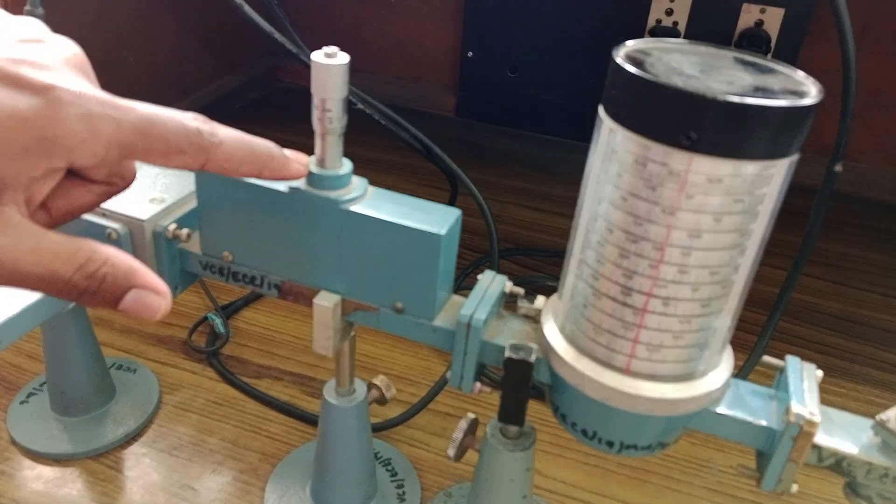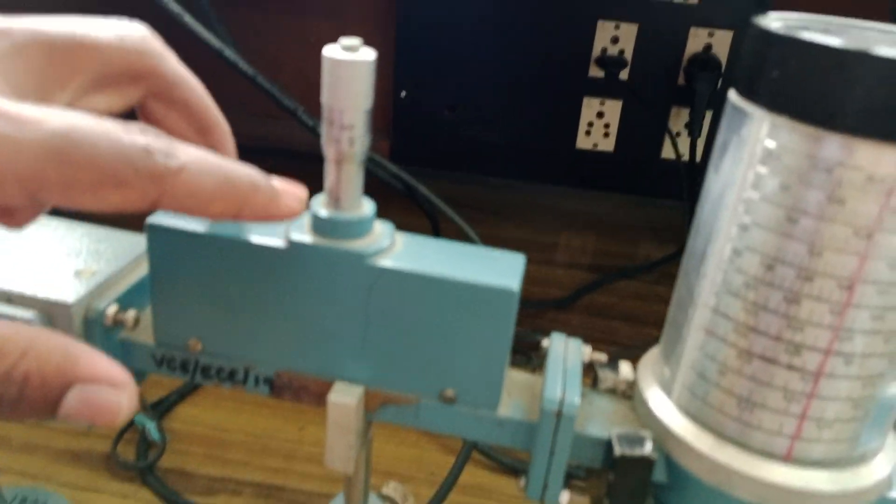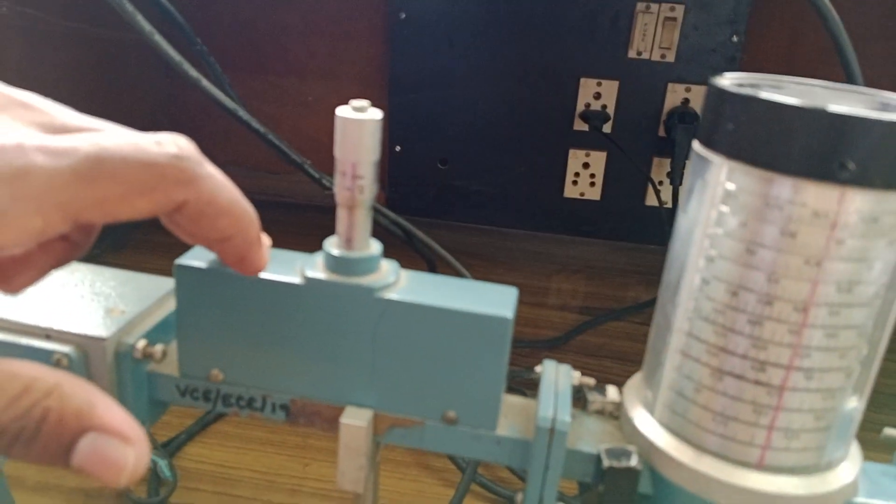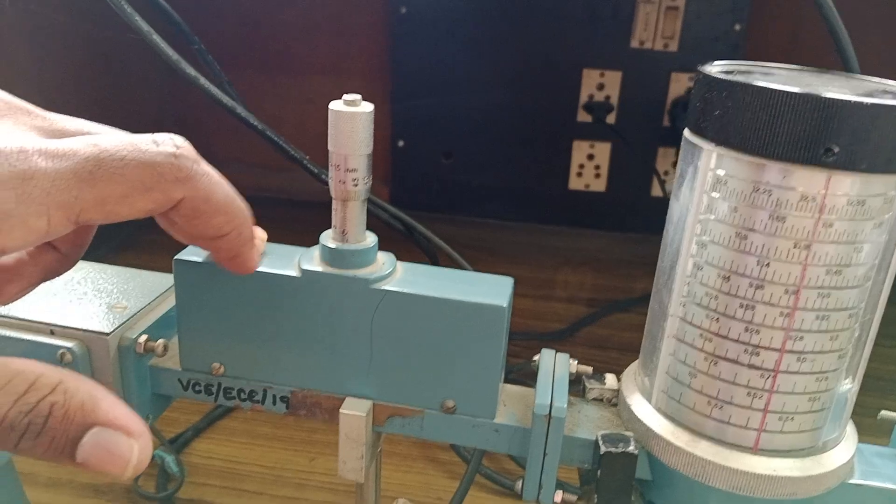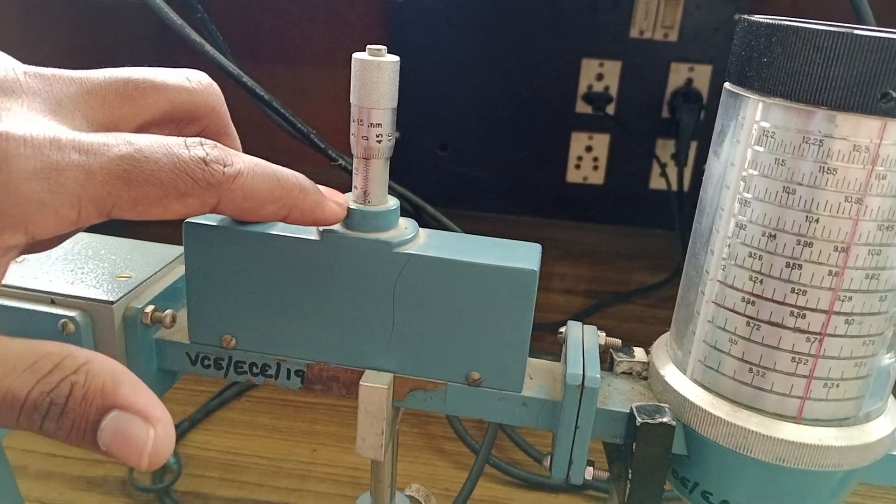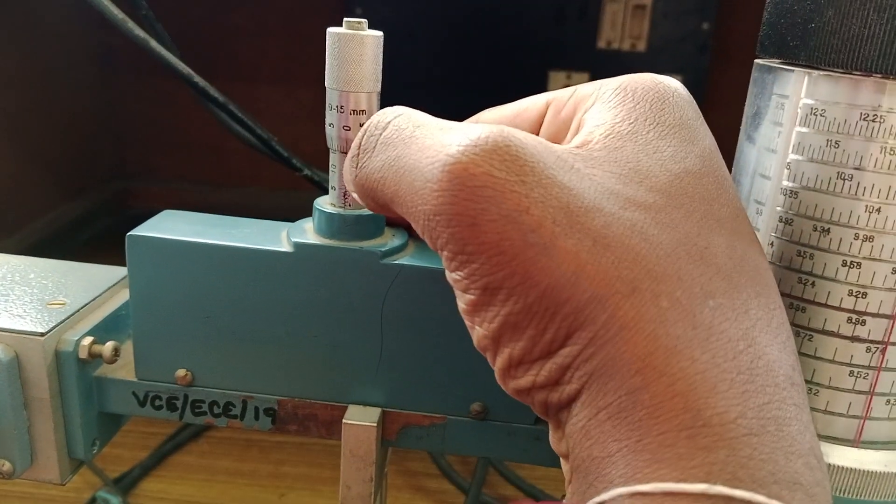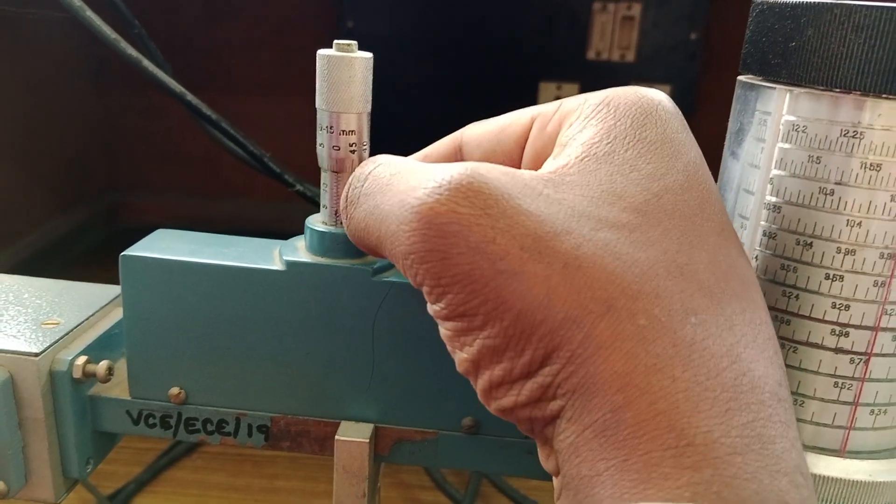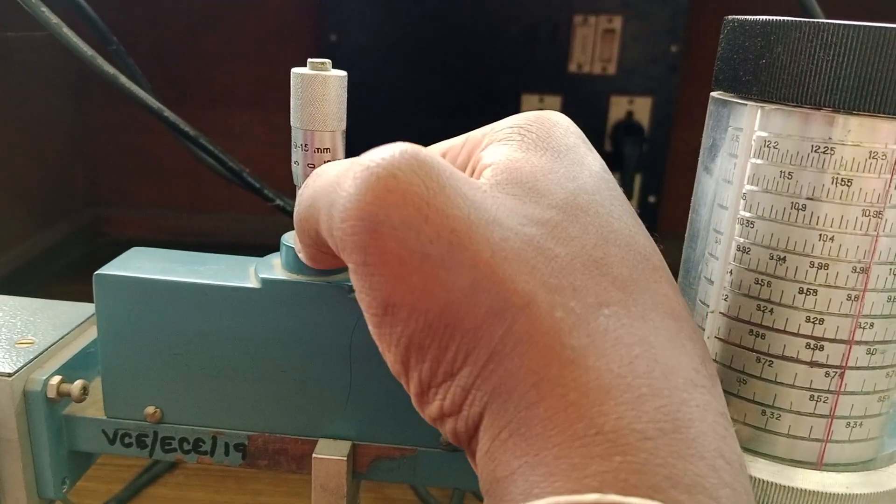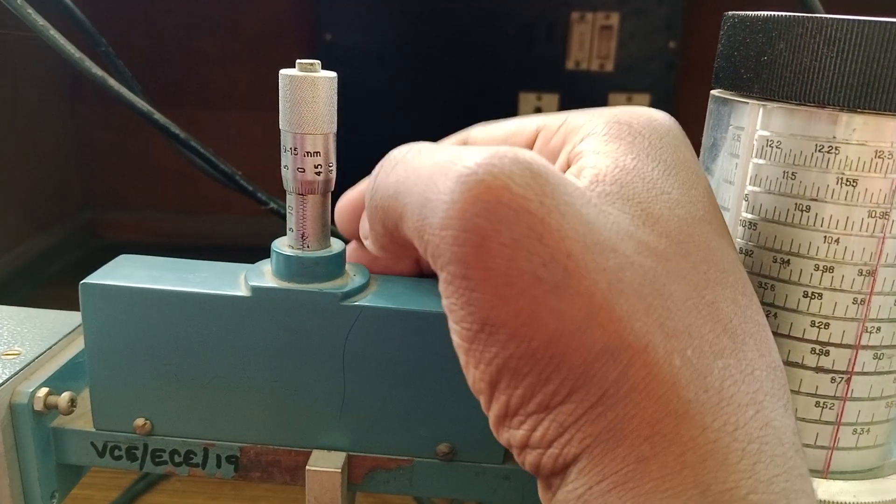Once you are done with that, here you can see the variable attenuator has a scale. Here you have readings from 0. You have to see where the 0 of the rotatable norm and the fixed scale are coinciding. Here you have to keep it as 15 in the beginning.